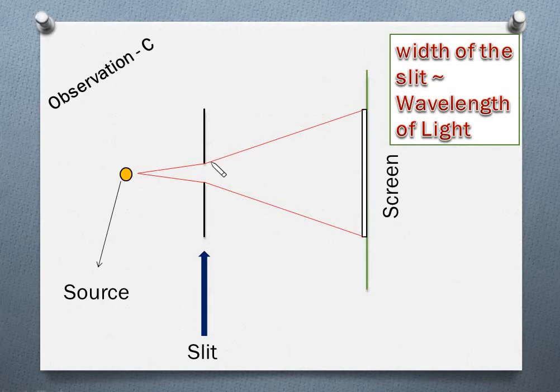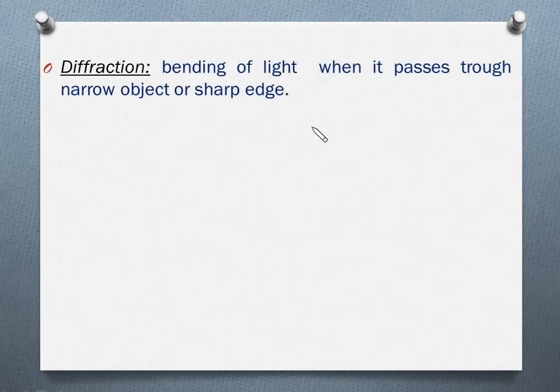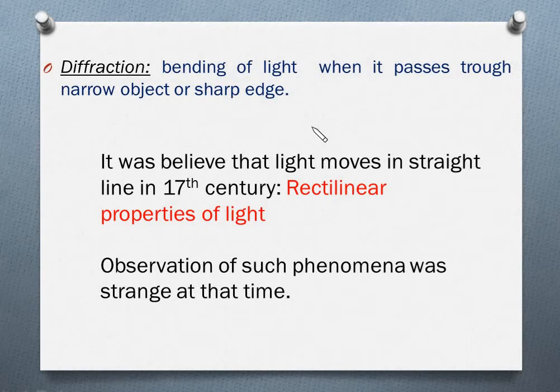This type of phenomenon — the bending of light — is called diffraction. Diffraction is nothing but the bending of light when it passes through a narrow opening or sharp edge. This type of phenomenon is not strange to us now, but during the 17th century it was very strange, because at that time it was believed that light moves in a straight line — what we call the rectilinear propagation of light.